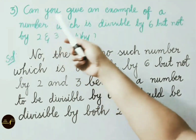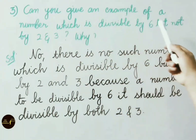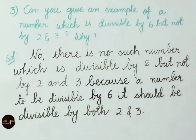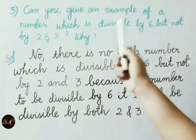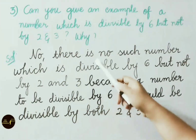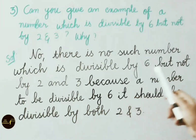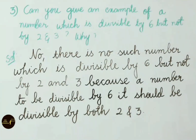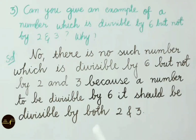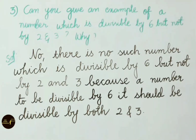Can you give an example of a number which is divisible by 6 but not by 2 and 3? Because a number to be divisible by 6, it should be divisible by both 2 and 3. Today we have seen Class 6 Chapter 3, HCF and LCM divisibility rules for 2, 3 and 6. Hope you liked this video. If you like this video, please like, share with your friends and subscribe to our channel. Thank you for watching.